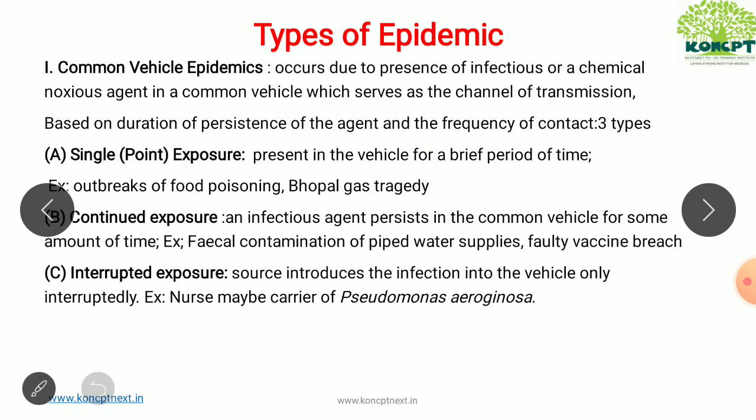The types of epidemic are basically two: common vehicle epidemics and propagated epidemics. A common vehicle epidemic occurs where the infectious agent or a chemical toxin is present in a common vehicle such as air or water. It can be three types: single exposure, continued exposure, and interrupted exposure.